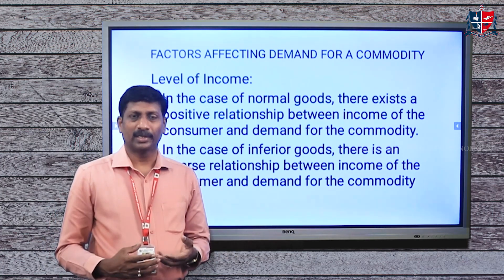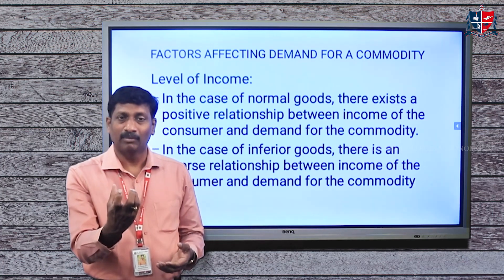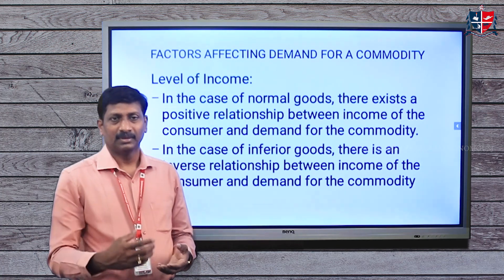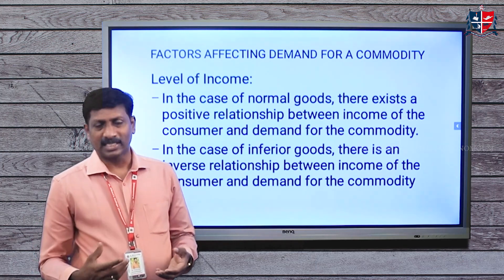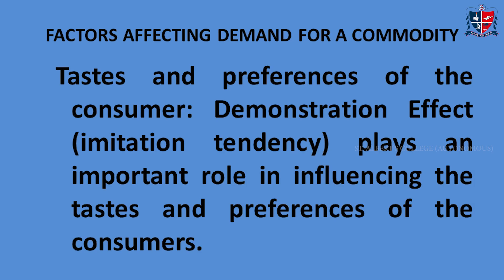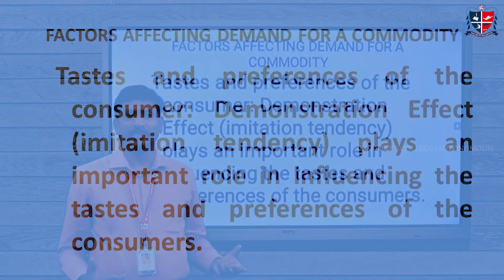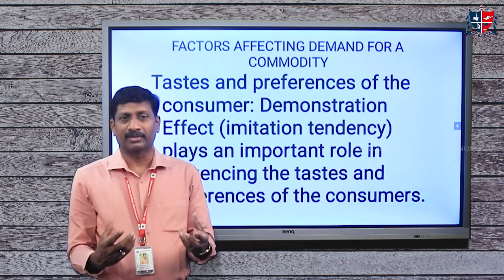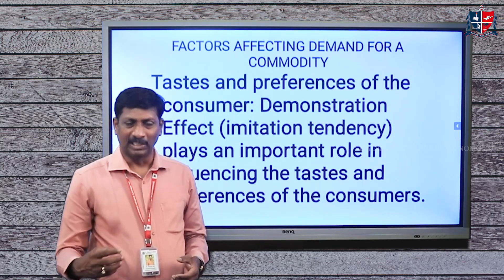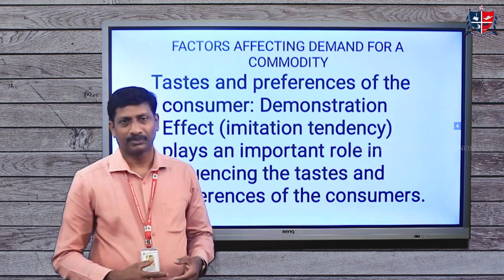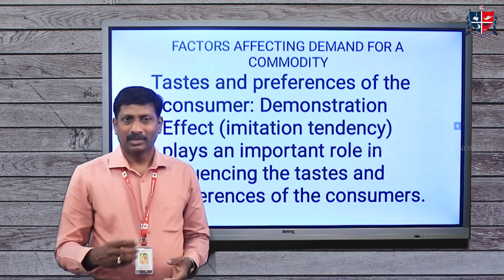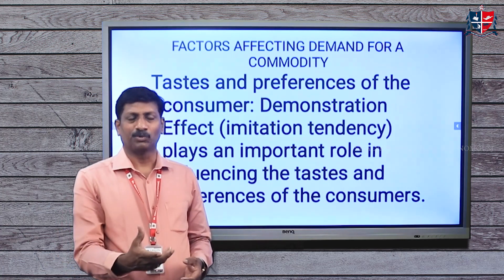The second factor is the price of related commodities, like substitutes and complementary goods. Substitutes are goods which can be used in place of each other — for example, tea and coffee. In the case of substitutes, when the price of a substitute increases — for example, when the price of coffee increases — consumers will move from coffee to tea, meaning demand for tea will increase.